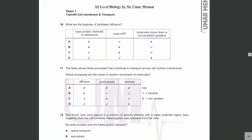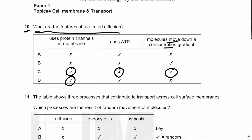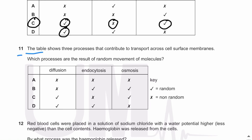MCQ number ten: what are the features of facilitated diffusion? For facilitated diffusion, transport proteins or protein channels are required. Because it is diffusion, it does not require ATP — it occurs due to random movement of molecules, it is a passive process, and molecules move down a concentration gradient. The answer is C.